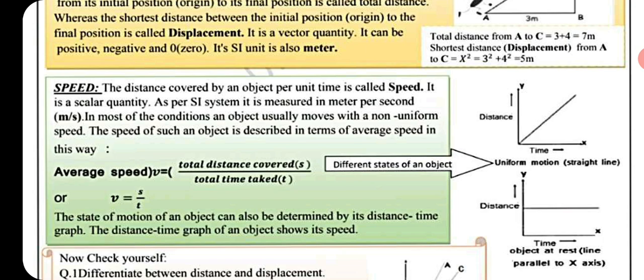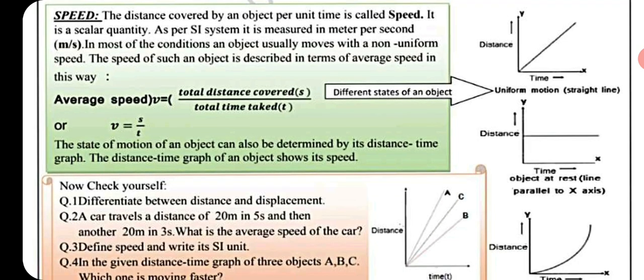The speed of such an object is described in terms of average speed. Average speed equals total distance divided by total time taken: v = s / t. The state of motion of an object can also be determined by its distance-time graph.